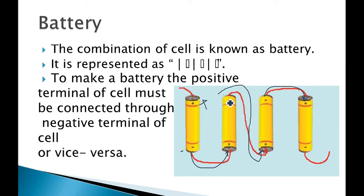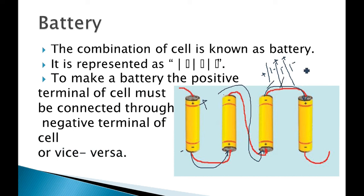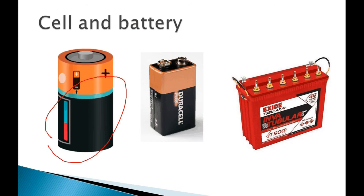To represent a battery: a bigger line for positive terminal and smaller line for negative terminal — that is one cell. Next cell: again positive and negative terminal. We have connected three cells together — first, second and third cell — forming a battery. To make a battery, the positive terminal of one cell must be connected to the negative terminal of another cell.